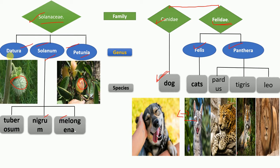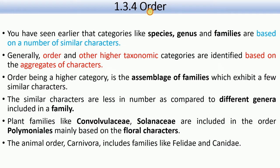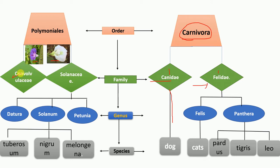Petunia and Datura also have a spherical fruit shape. Now let's move on to the next category: order. Order is a group of families. Canidae and Felidae — the dog cannot be placed in Felidae, so it has a separate family, Canidae. Canidae and Felidae fall under one order — Carnivora — because they are all carnivorous animals. Similarly for plants, Convolvulaceae and Solanaceae share some common flower characteristics, so they are placed under the order Polemoniales.